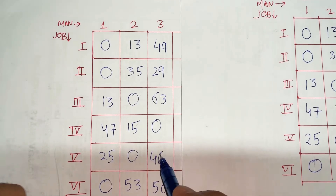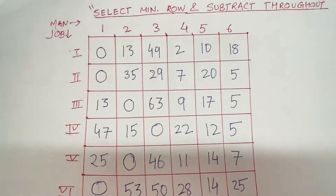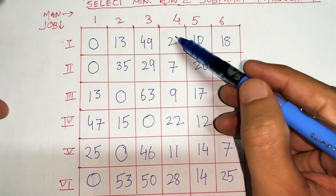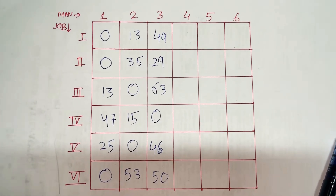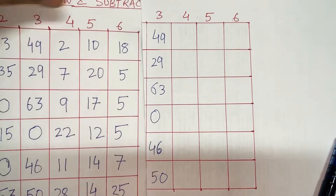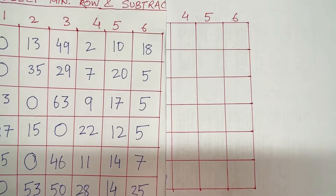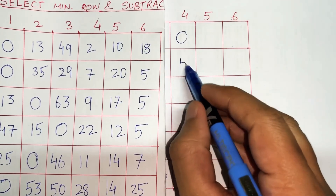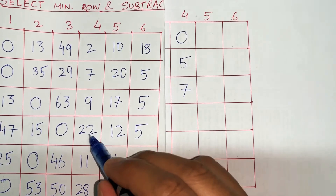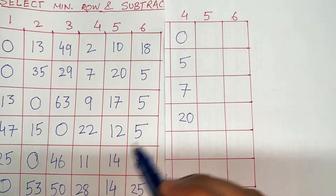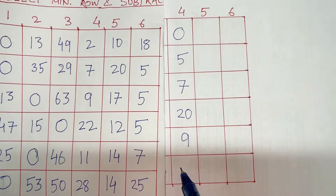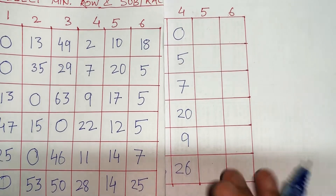The actual changes start with column 4. The minimum in column 4 is 2, so I am going to subtract 2 throughout: 2-2=0, 7-2=5, 9-2=7, 22-2=20, 11-2=9, and 28-2=26.